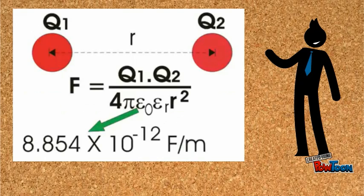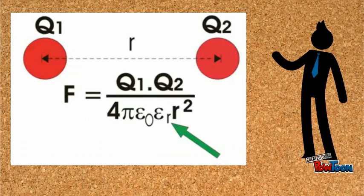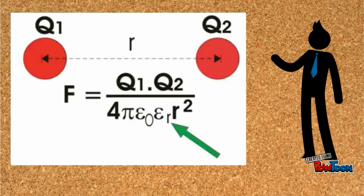Where epsilon 0 is the permittivity of air or vacuum and its value is 8.854 into 10 to the power of minus 12 farads per meter. And epsilon r is the relative permittivity of the surrounding medium in respect to the permittivity of air or vacuum.